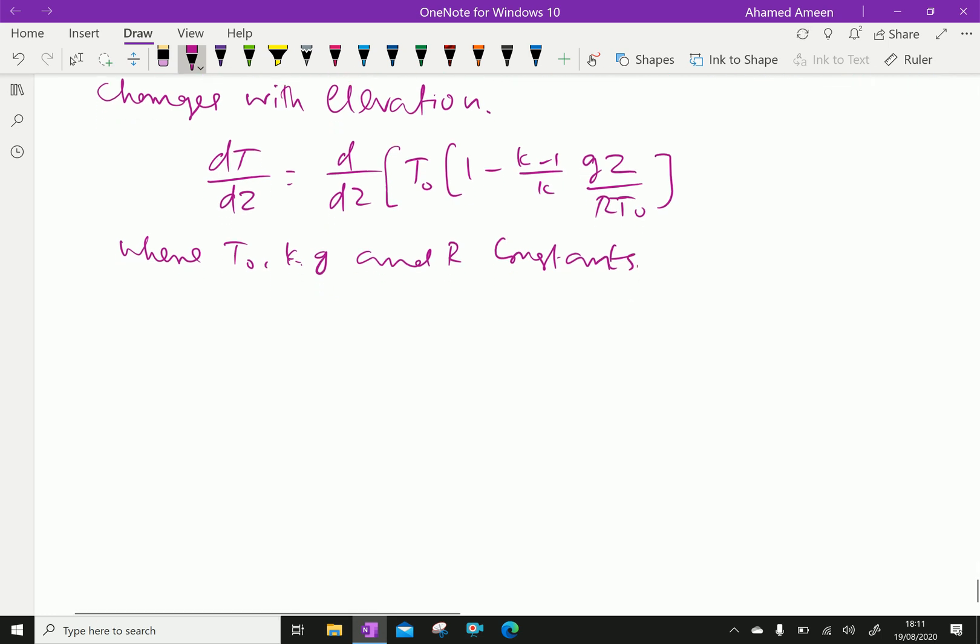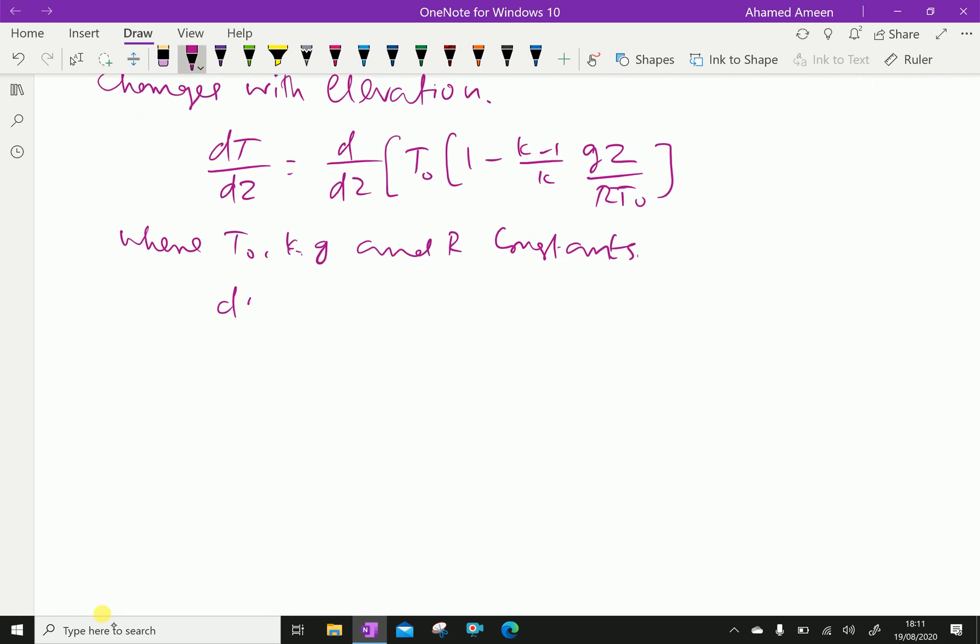Now, we will differentiate that is DT by DZ equal. The constants we will take first, that means here, minus K minus 1 by K, the constant and GZ by RT0.